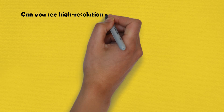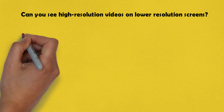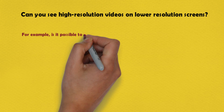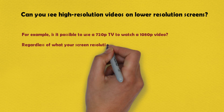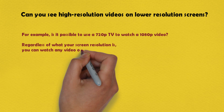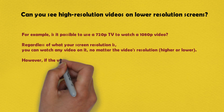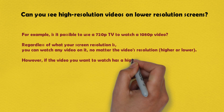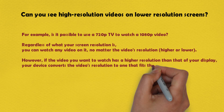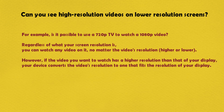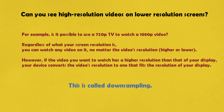So the question you might ask is: can you see high resolution videos on a lower resolution screen? The answer is yes. It is possible to use a 720p TV to watch a 1080p video. Regardless of what your screen resolution is, you can watch any video on it, no matter the video's resolution, higher or lower. However, if the video you want to watch has a higher resolution than that of your display, your device converts the video's resolution to one that fits your display. This is called downsampling.